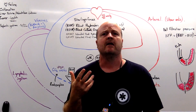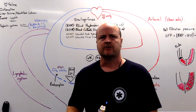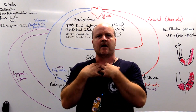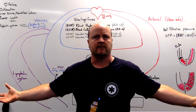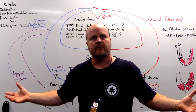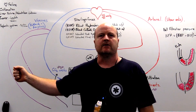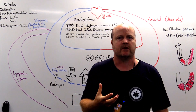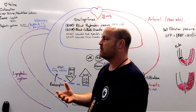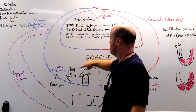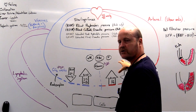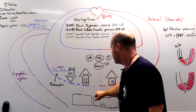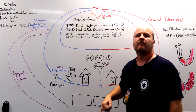If our left side of the heart fails — remember, the left side pumps blood from the lungs to the body — if it's failing and not clearing that blood to the body, it's going to build up in the lungs. So now in our pulmonary circulation, we get a buildup of hydrostatic pressure, and therefore we're going to get fluid developing in the interstitial space of our lungs.